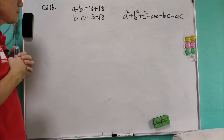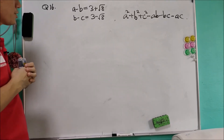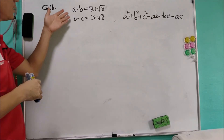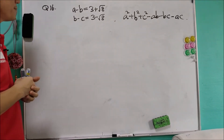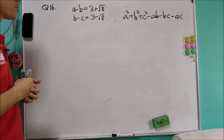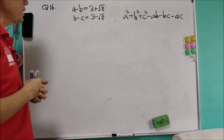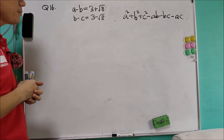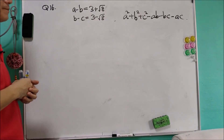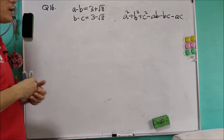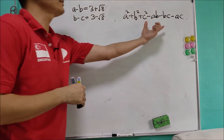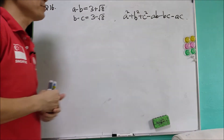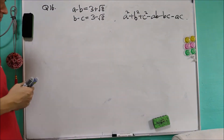We look at question 16. This is an algebraic question. Given that a minus b equals 3 plus square root of 8, and b minus c equals 3 minus square root of 8. We are asked to find the value of the expression.